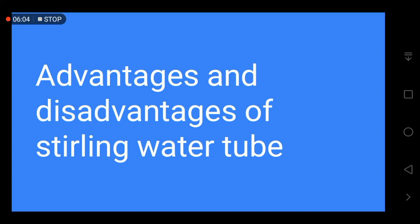The disadvantages of Sterling water tube boilers are: first, cleaning and inspection is difficult due to its structure; second, Sterling boilers are large in size; and third, the temperature in the superheater is limited in Sterling water tube boilers.